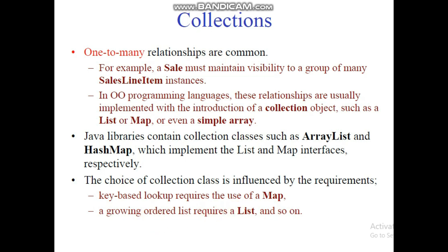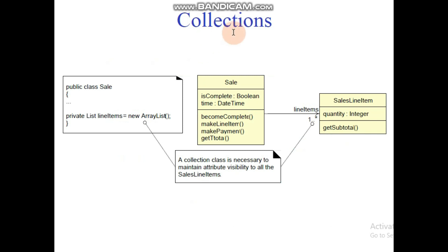Here you can see a Sales class with SalesLineItem. A collection class is necessary to maintain attribute visibility to all the SalesLineItem instances.